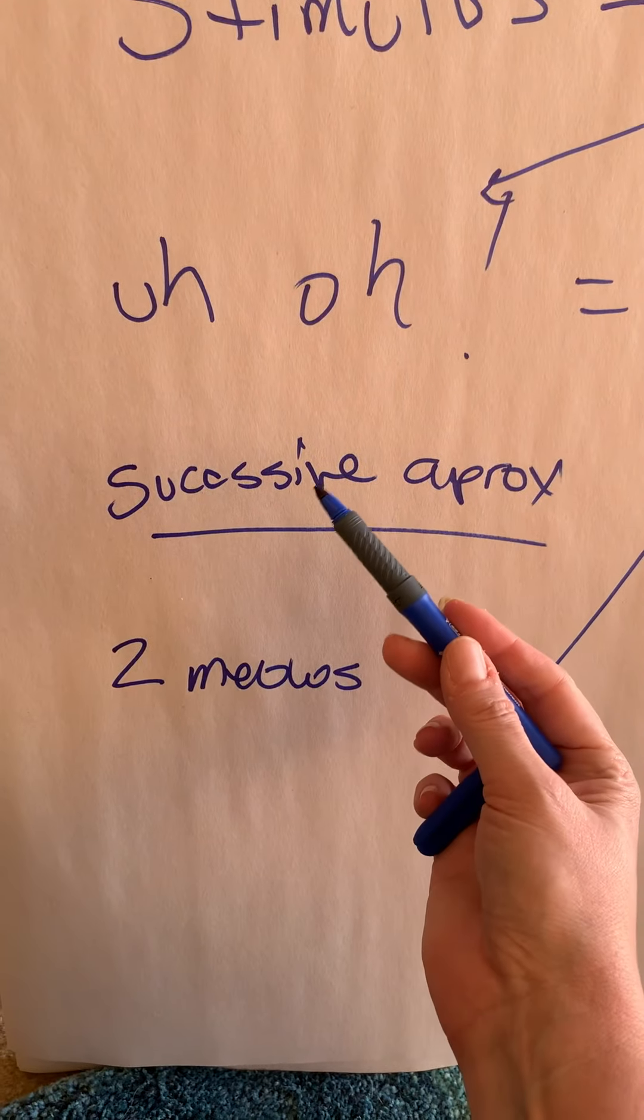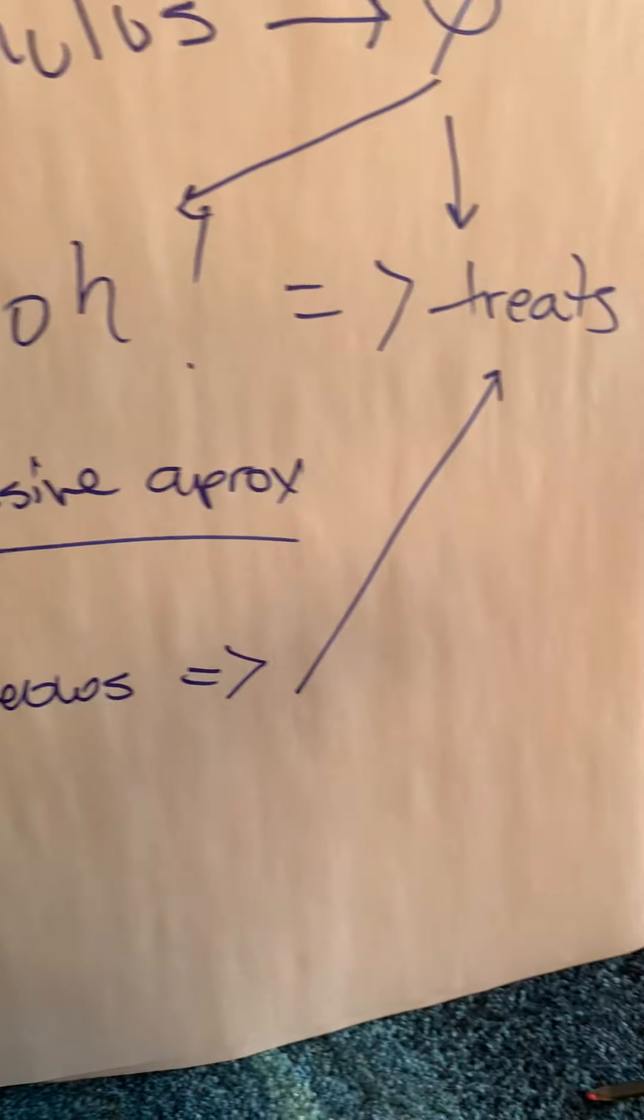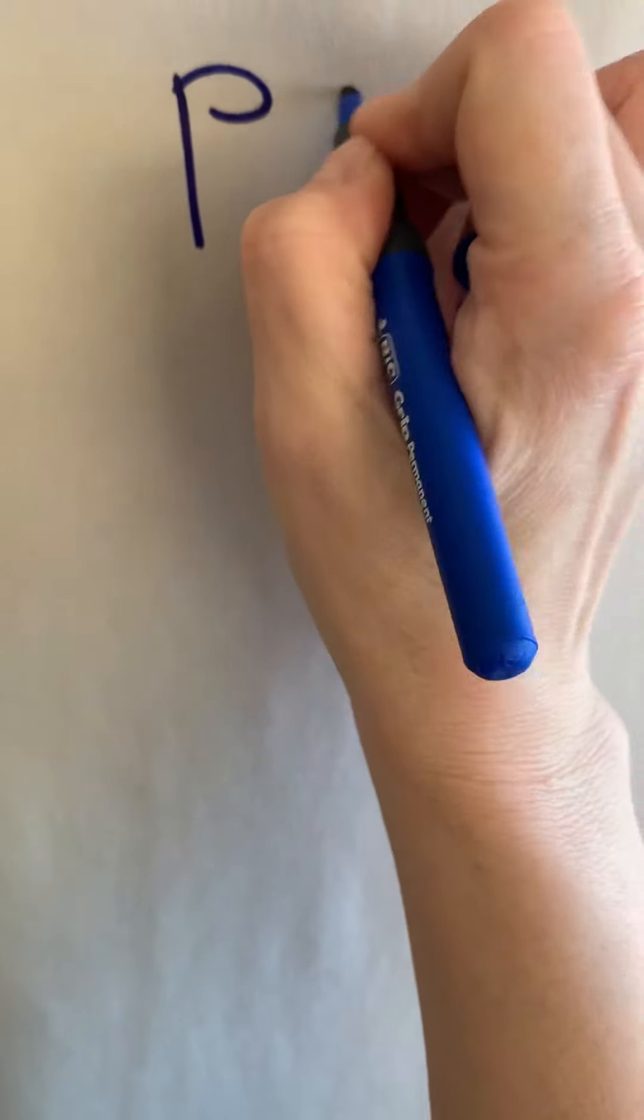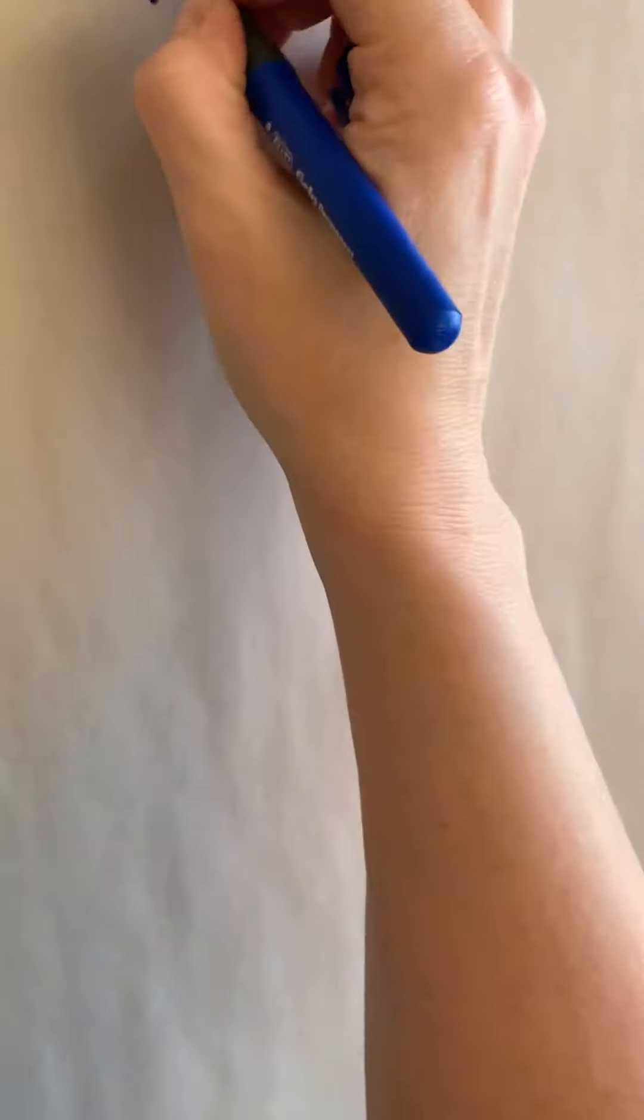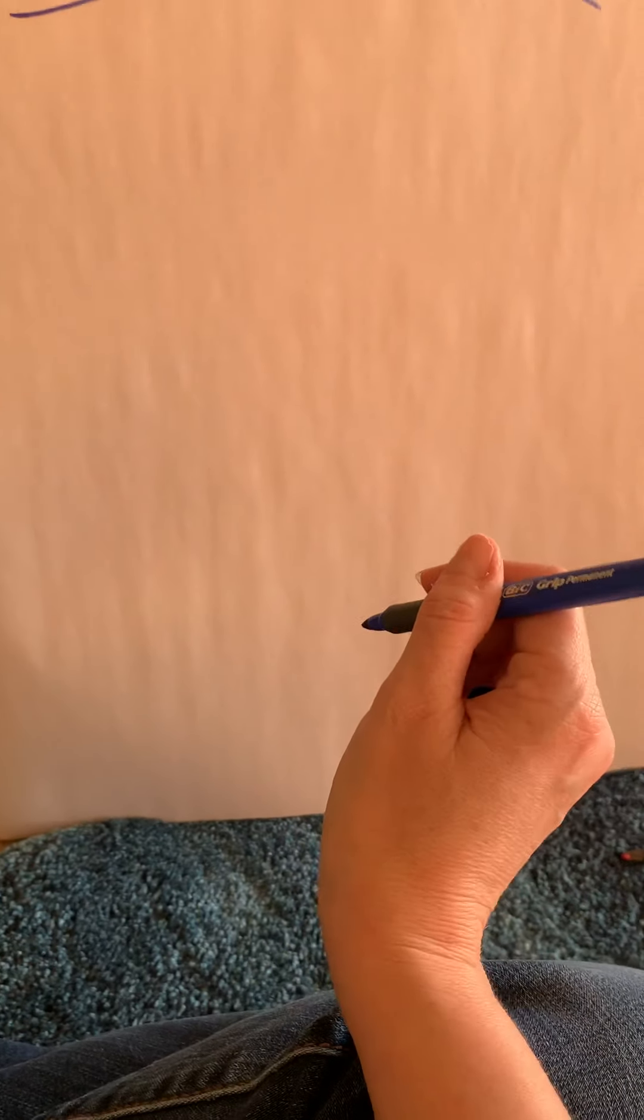Every single time he hears uh-oh, and then eventually said uh-oh, he would get treats. So what we did from there through rewarding something called successive approximations, is that we reward the behavior that gets closer and closer to what we want. And that is actually something called positive reinforcement.